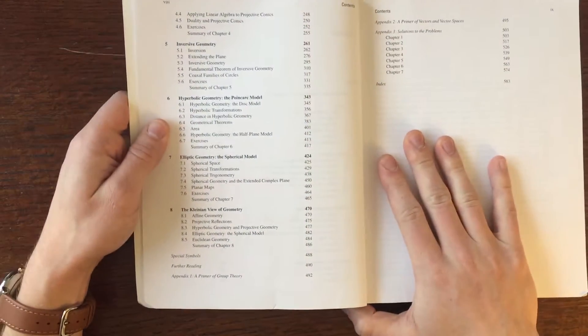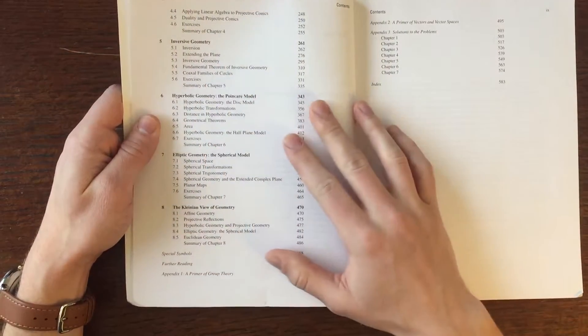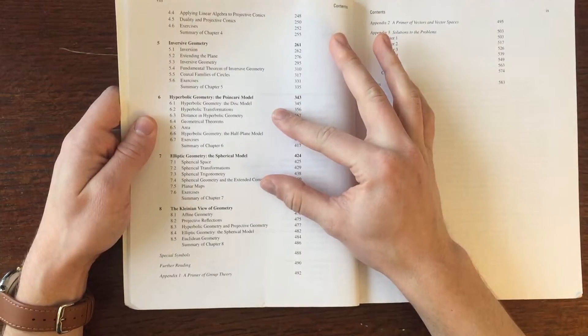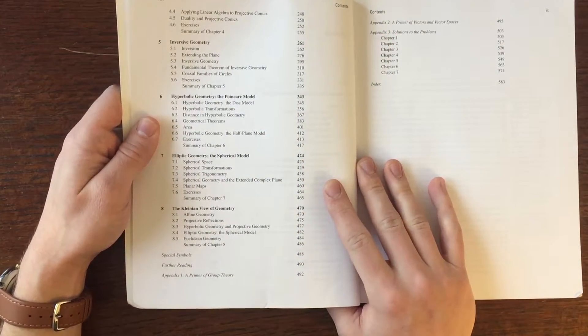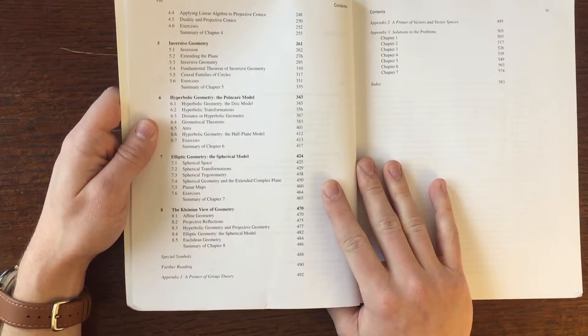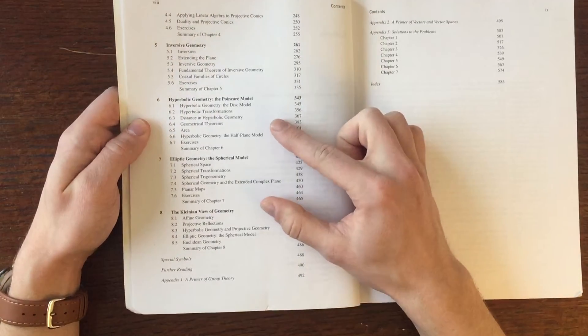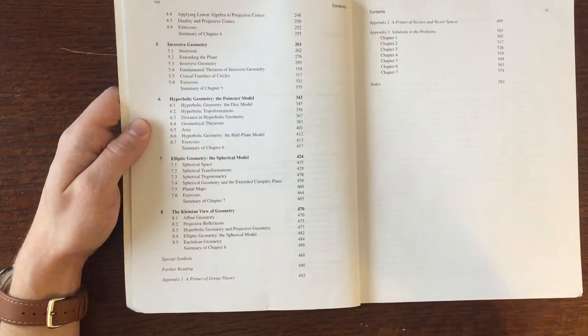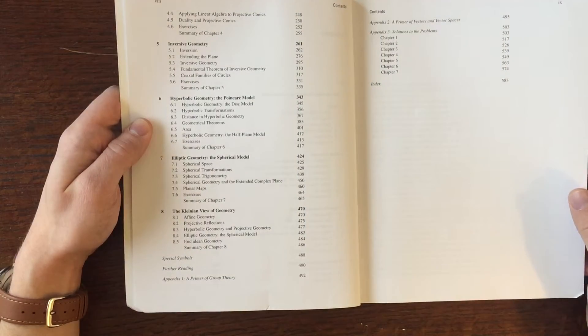It goes on to talk about something called inversive geometry, hyperbolic geometry, and elliptic geometry. Maybe you've heard of those things. Those are the sort of geometries where the sum of the three angles in a triangle don't necessarily add up to 180 degrees. We start talking about things where you're changing the fifth postulate in Euclid's Elements. Really cool stuff.